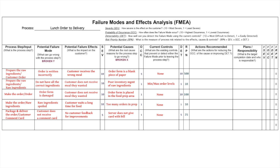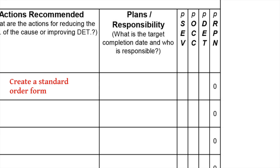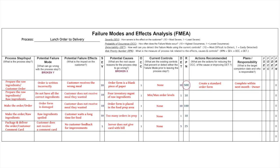The seventh step is to determine recommended actions for the process steps with the highest RPNs. A high RPN means this is the first item that should have actions developed, as these actions should provide the most effective improvement for the process. In this example, the prepare raw ingredients step with customer order input has the highest RPN rating, and a possible recommended action is to create a standard order form. The eighth and final step is to develop a plan for when and who will be responsible for completing the recommended actions — in our example, the owner will create a standard order form within the next month. The list of recommended actions, plans, and responsibilities forms the basis for your implementation plan.